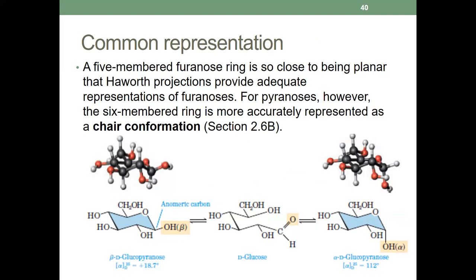For pyranoses, however, the six-membered ring is actually best represented by the chair conformation as the most stable conformation. Haworth can be used, but the better way of representing a pyranose six-membered ring is via the chair conformation. This is what I asked earlier — how to write the chair conformation of glucose.